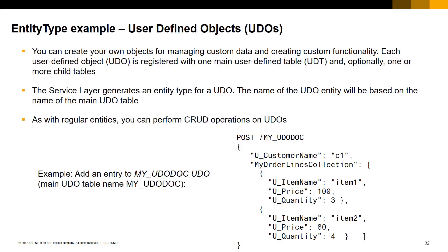This slide shows another example of entity type. As you know, in SAP Business One you can add your own objects as user-defined objects, also called UDOs. A UDO is comprised of one or more user-defined tables, also called UDTs. Each UDO must be registered in SAP Business One with one main user-defined table and optionally one or more child tables. Each user-defined object will be defined in the service layer metadata file as an entity type. The name of the UDO entity will be based on the name of the main UDO table. As with regular entities, you can perform CRUD operations on UDOs. In this example, we use the POST command to add an entry to the UDO MyUdoDoc.